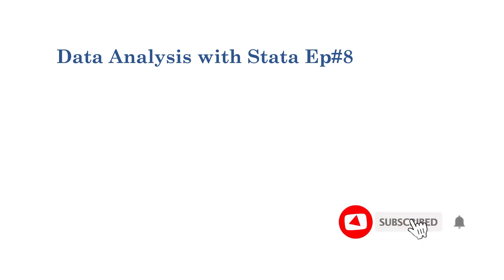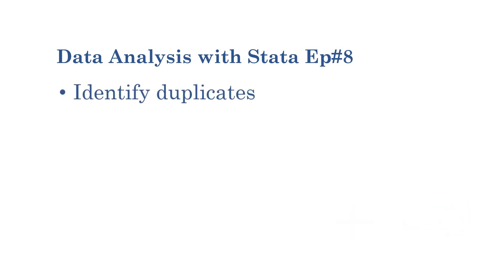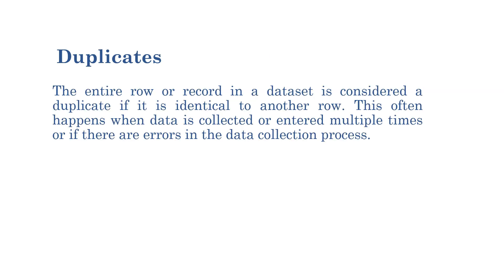Hello everyone, welcome again to data analysis using Stata. In this episode I'll guide you on how to identify and remove duplicates within your dataset. Before we go to practice, let's understand the concept of duplicates. An entire row or record in a dataset is considered a duplicate if it is identical to another row. This often happens when data is collected or entered multiple times, or if there are errors in the data collection process.